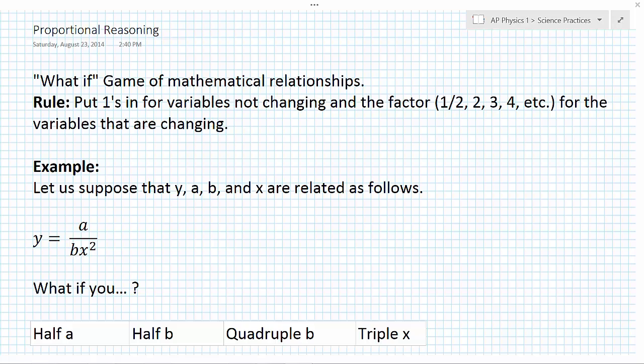For example, let's say I change the length of the string and I double it. What's going to happen to the period? So proportional reasoning is this what-if game of mathematical relationships. The rule is this: if you want to do this really simply, all you need to do is put ones in for all variables that aren't changing and put in a factor for the variables that are changing.